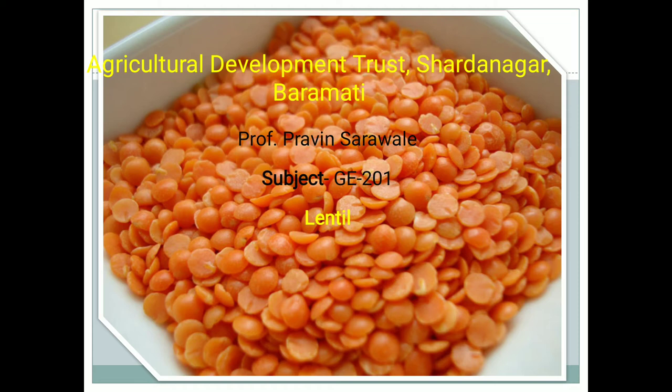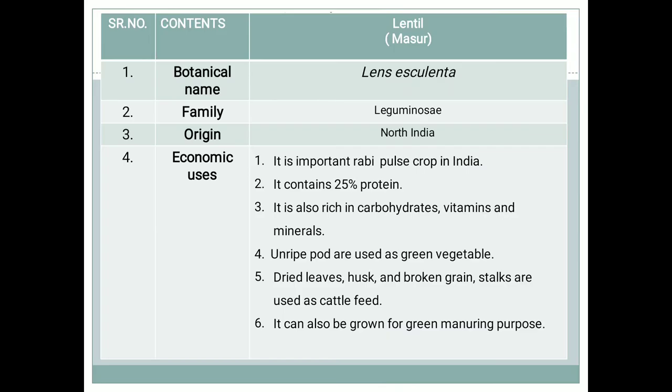In this subject, we have already covered nearly about 4 rabi crops: wheat, gram, and sugarcane. The next rabi crop is lentil. As all of you know, lentil is one of the pulse crops and it is the most important pulse crop in India.